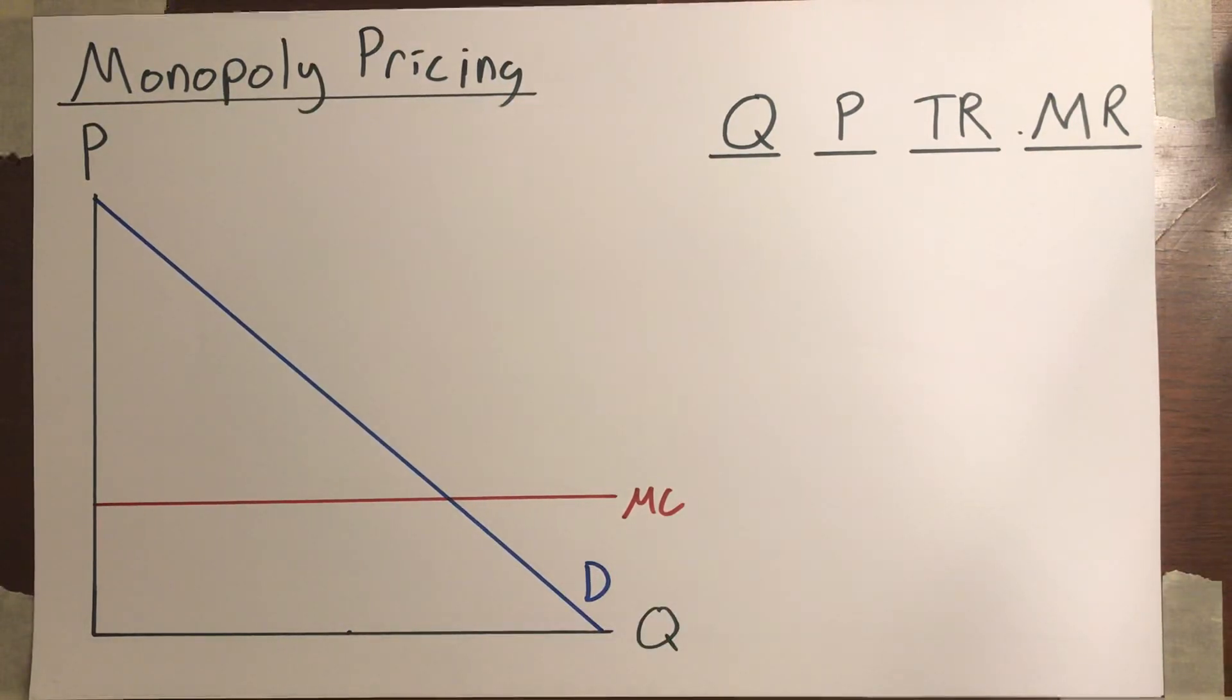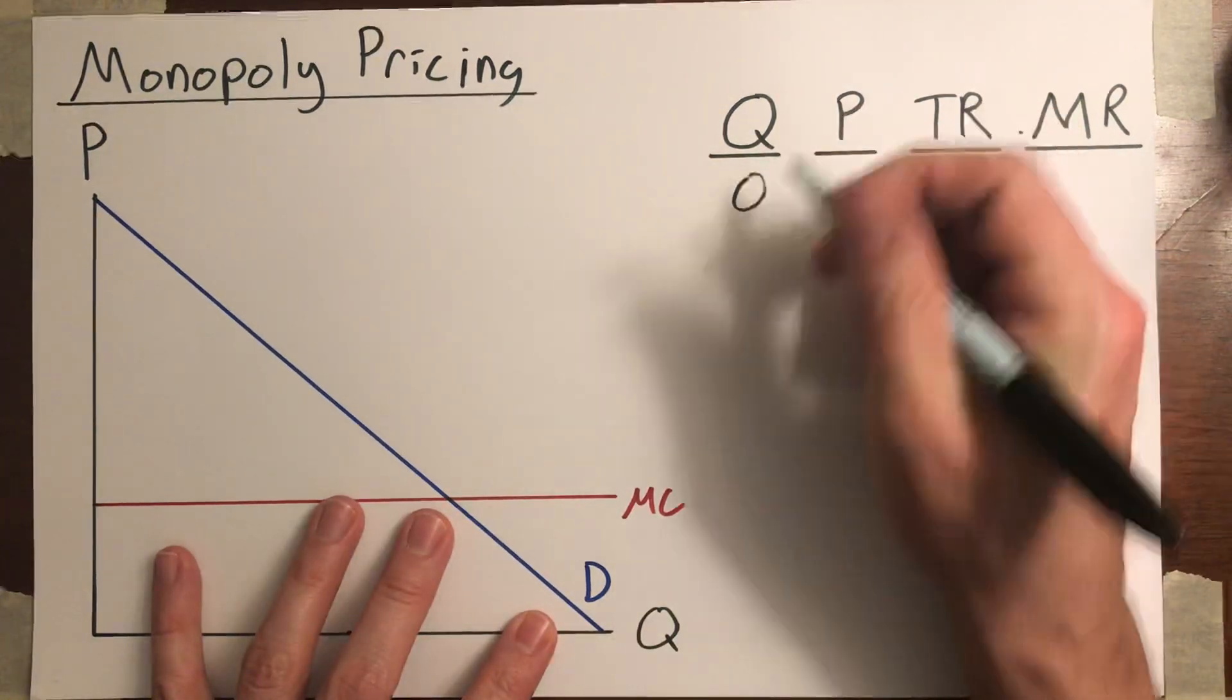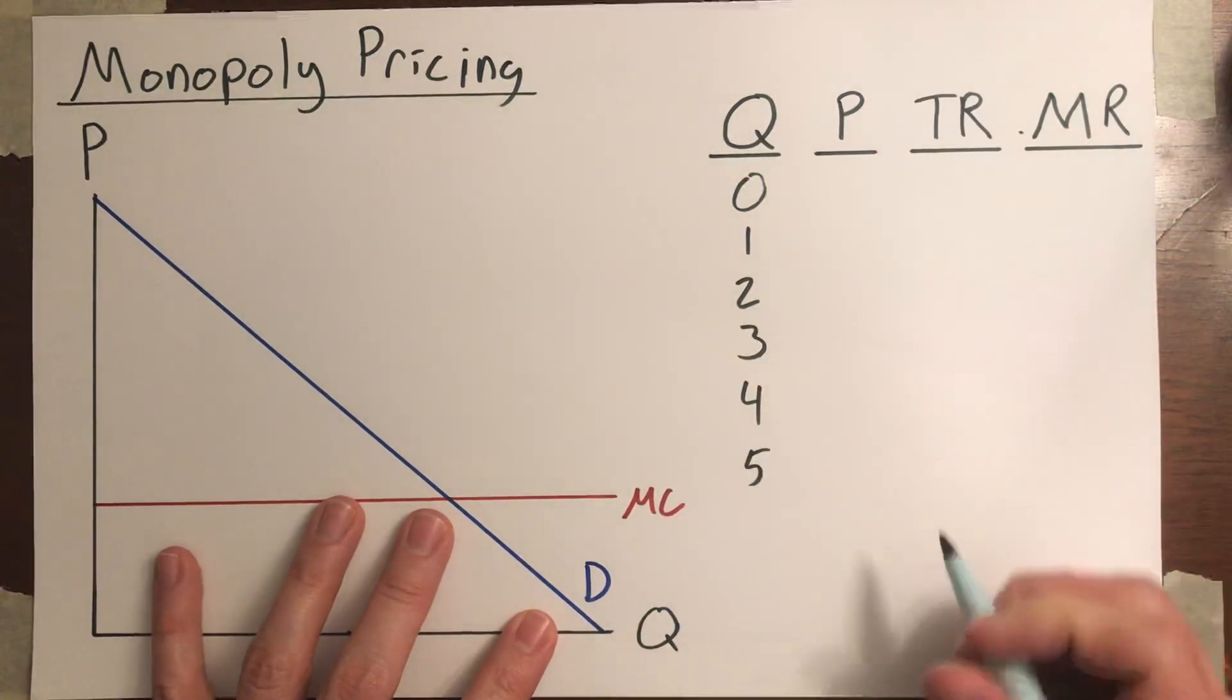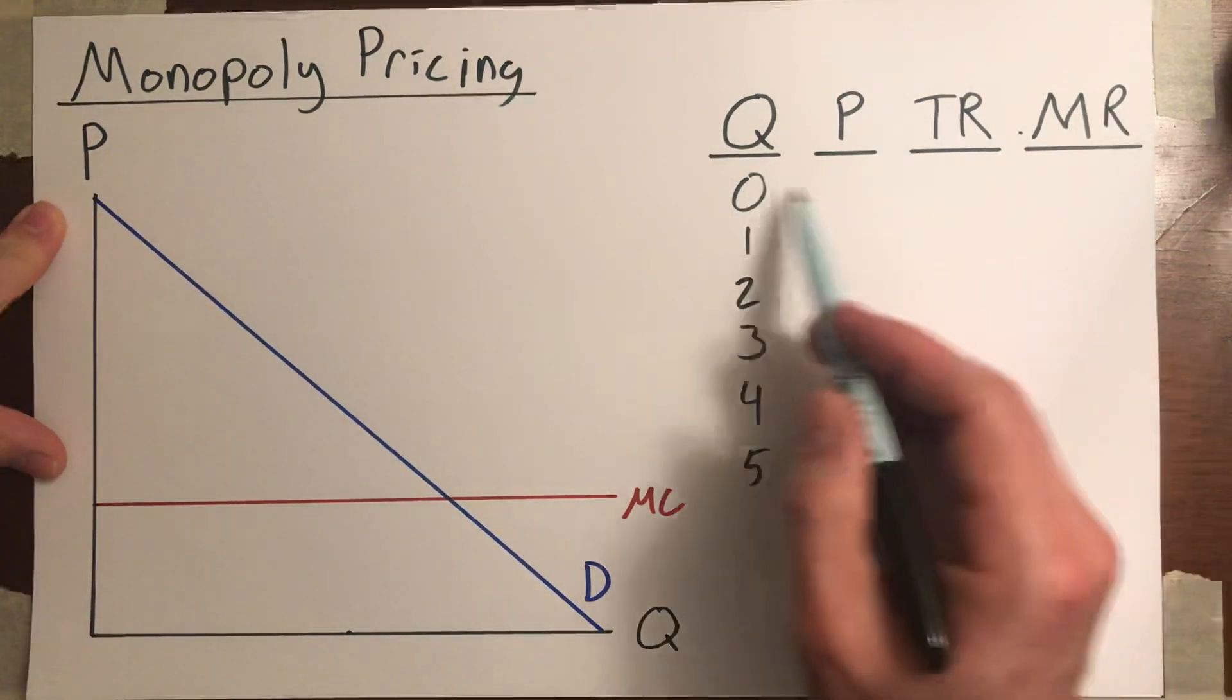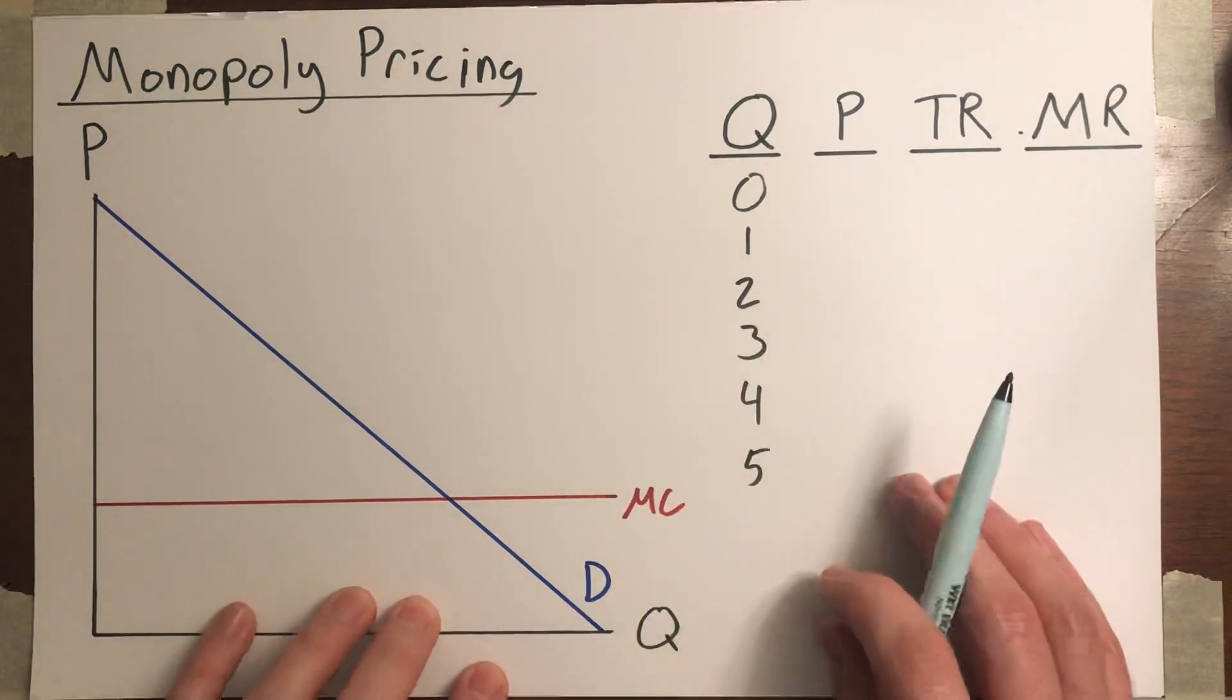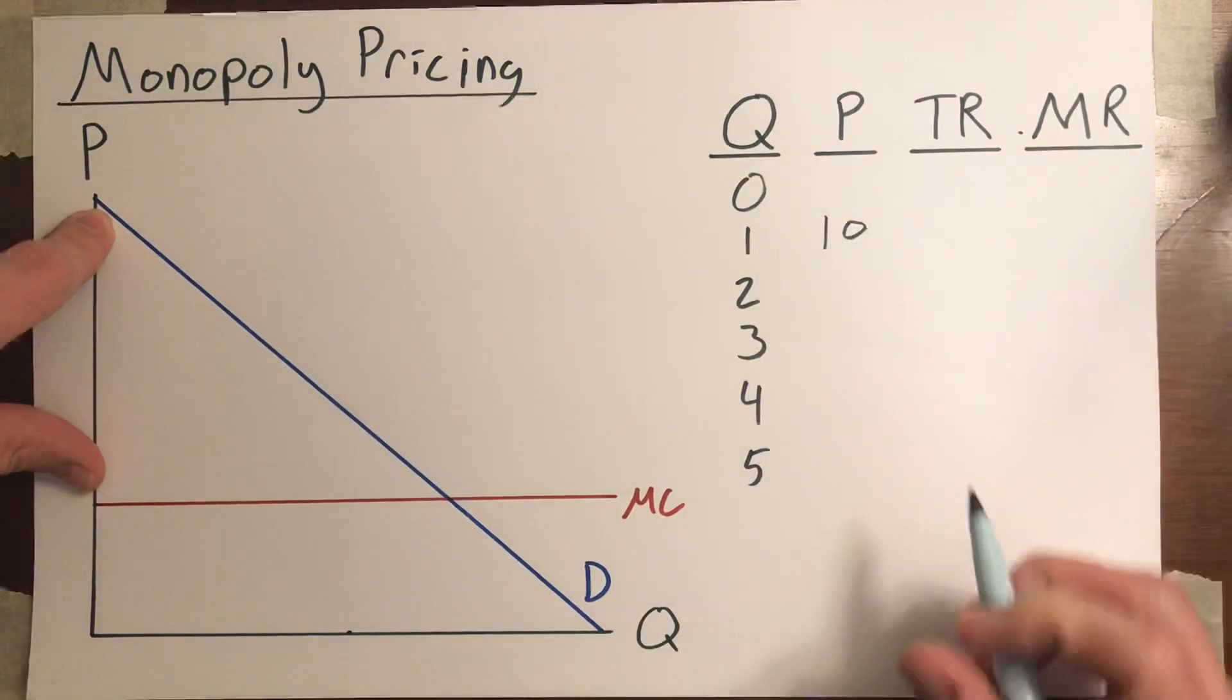So let's go through that. I'm going to just mark in the following levels of output: one unit, two, three, four, and five. Now, here's what I'm not going to worry about what happens if you're selling zero units. That's as long as you set the price above, at or above, the y-intercept of this demand curve. But if you sell one unit, let's just say that that first unit, the highest price you could sell it for, would be $10.